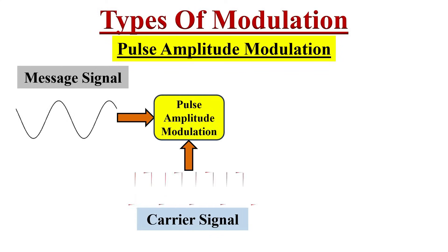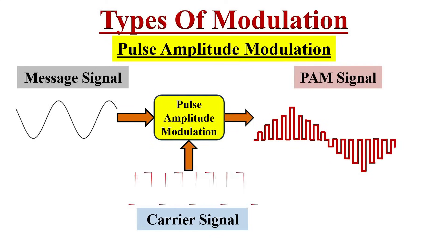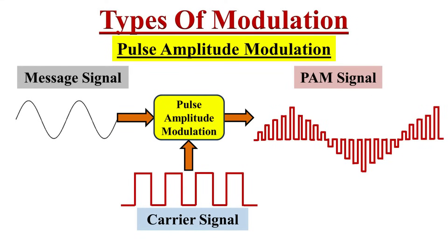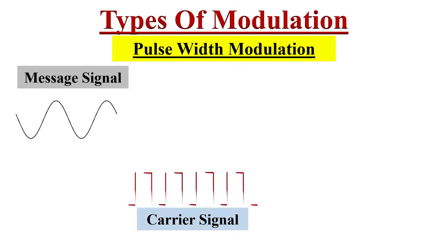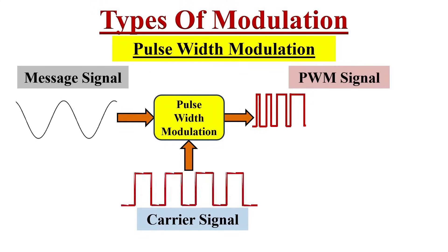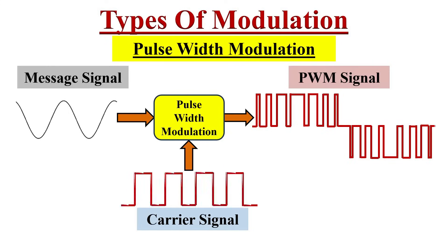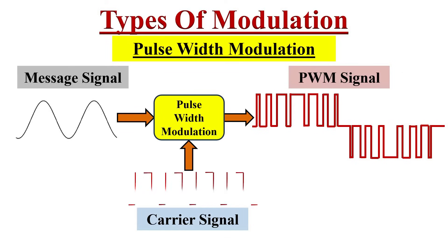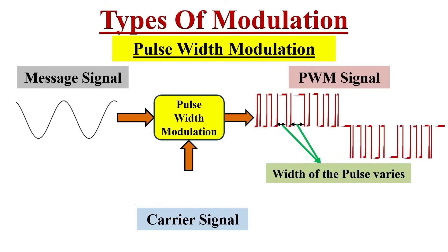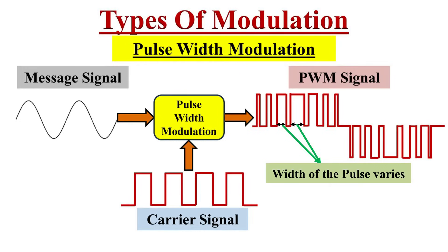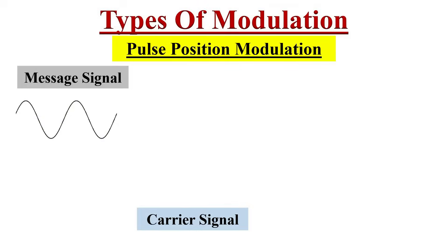In pulse amplitude modulation (PAM), the pulse duration remains the same, but the amplitude of the pulse varies according to the input message signal's variation. In pulse width modulation (PWM), the amplitude of the pulses remains the same, but the width of the pulses changes according to the message signal's variation. We can easily identify the superimposed message signal at the output — the output signal width increases as the message signal's amplitude increases, and vice versa. We will discuss PWM in detail in another video.